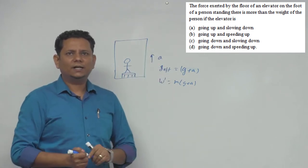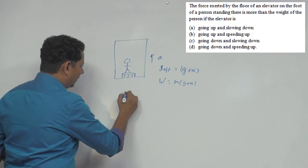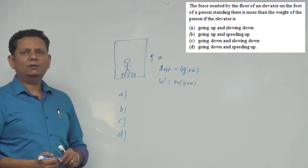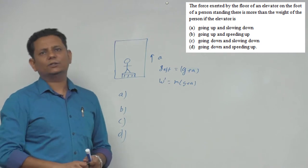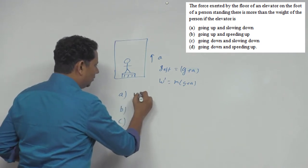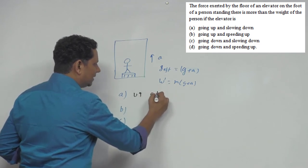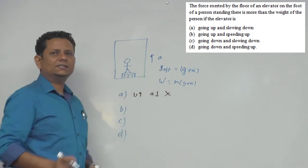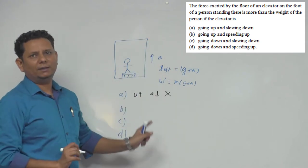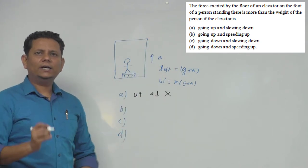Now if we look at A, B, C, D, in this case it is going up and slowing down. In this case going up, your velocity is upward but slowing down means your acceleration is downward. Hence this is not the right choice because we need acceleration upward. Velocity doesn't matter. Second option is going up and speeding up, which means it's going up and acceleration is also upward, only then your velocity will increase.